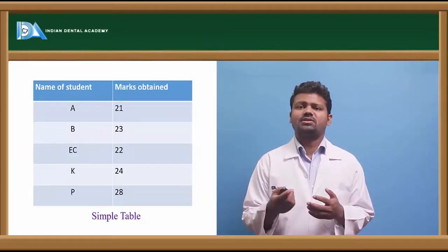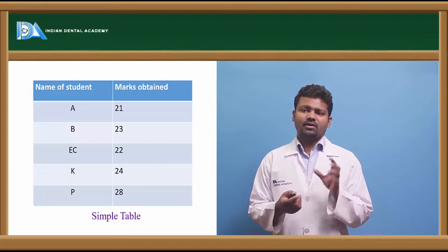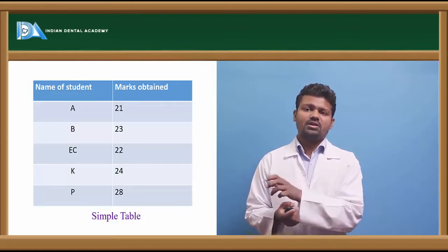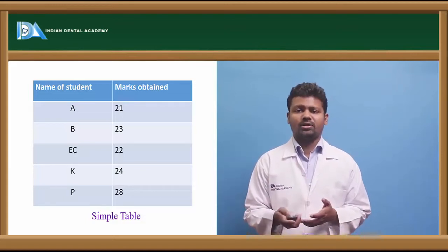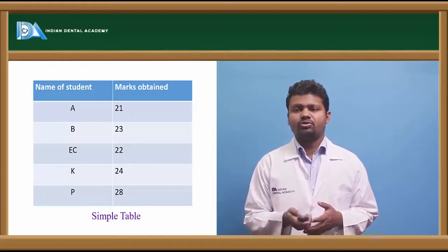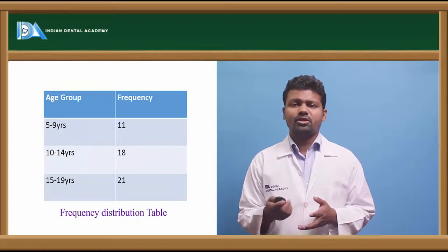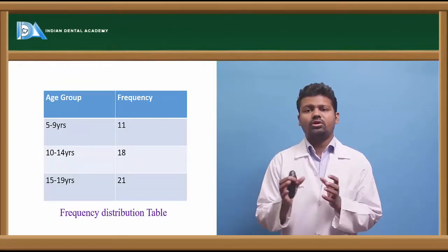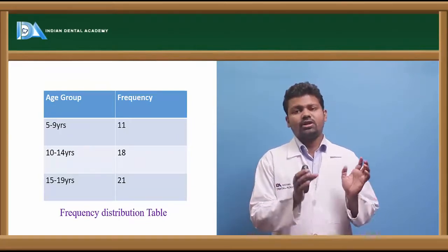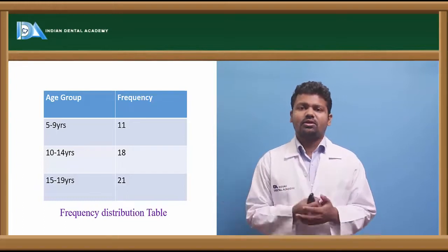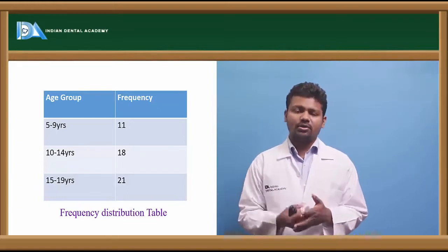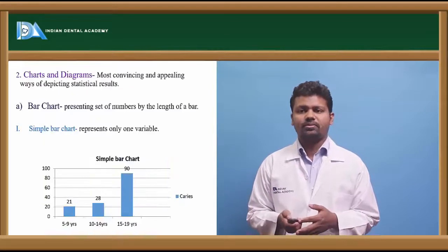The simple table shows specific information, like student A got 21 marks. Then there are frequency distribution tables, used when you want to know the number of children from age 5 to 9 years in a particular class or community.